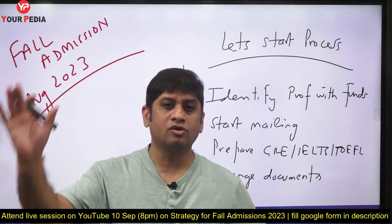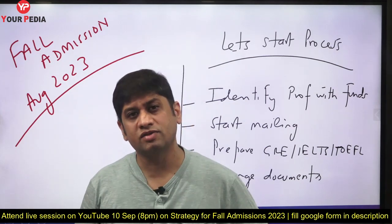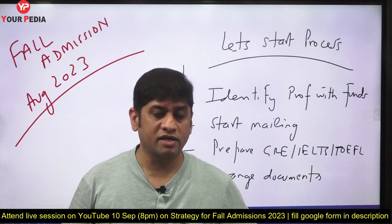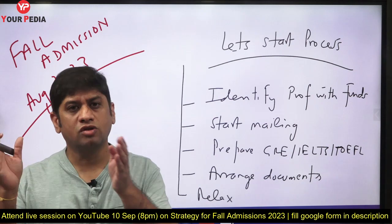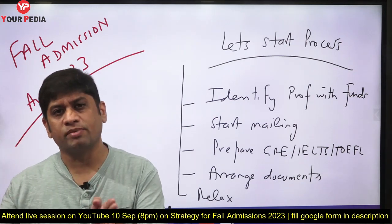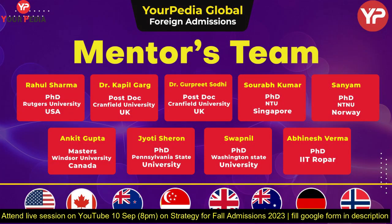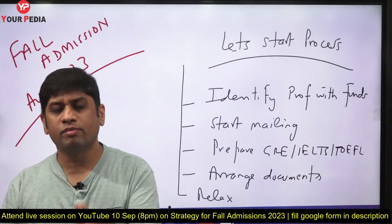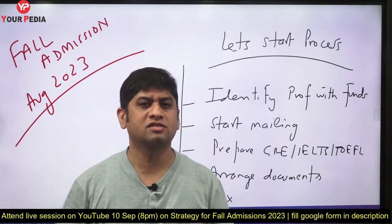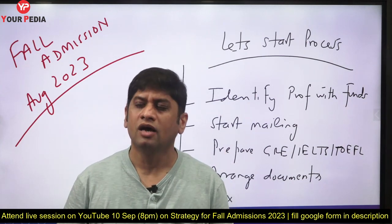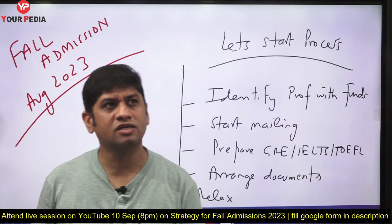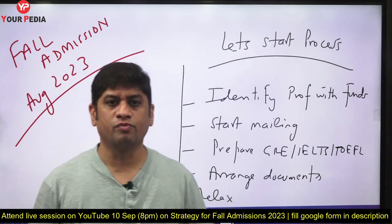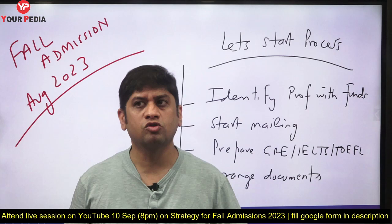Prepare to go to these countries with a scholarship in the fall season — that is August 2023. The process needs to be started now. September, October, November — these three months you need to write these exams and mail hundreds of professors. Don't worry, there is always a very smart way to mail these professors, and the mentors of Your PDA will guide you on that.